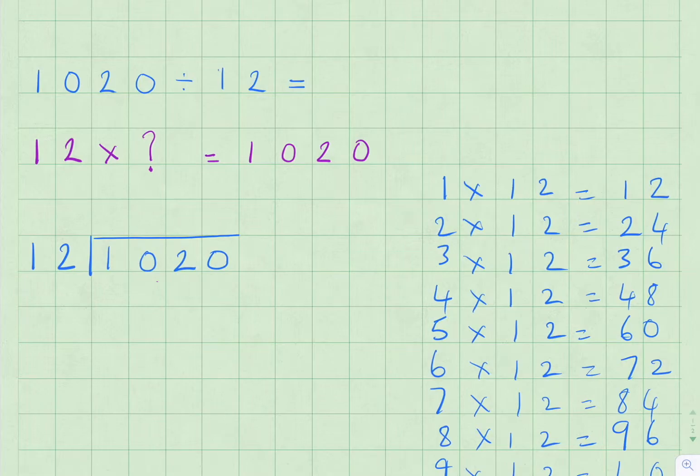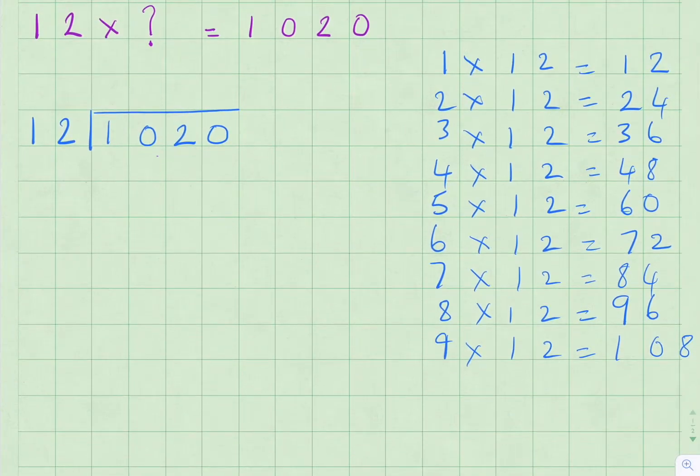Does 12 go into 102? 12 does go into 102. We've got 9 times 12 is 108, so that's a bit too much. 8 times 12 is 96. So we can say that 12 goes into 102 8 times, and 8 times 12 is 96.